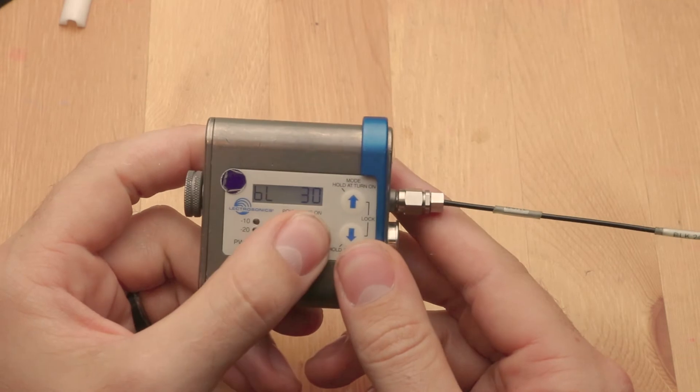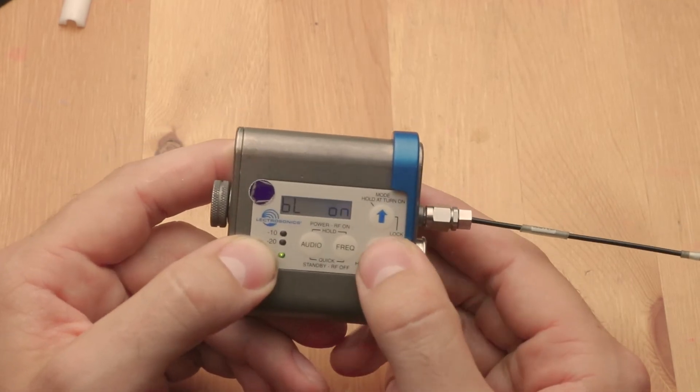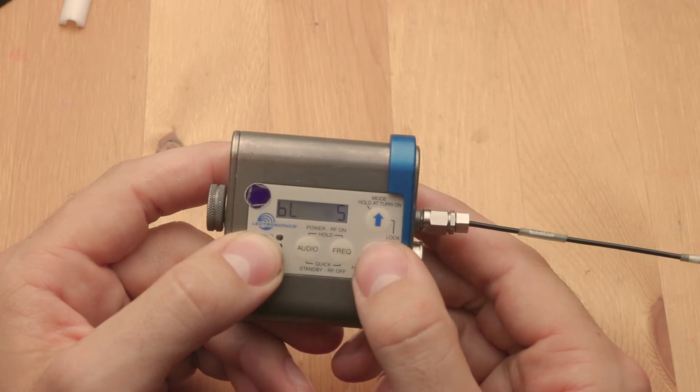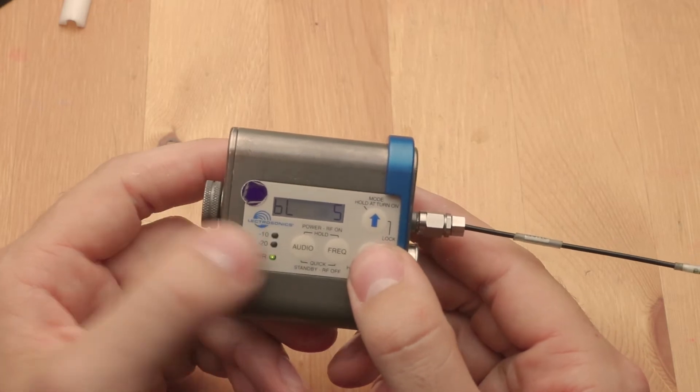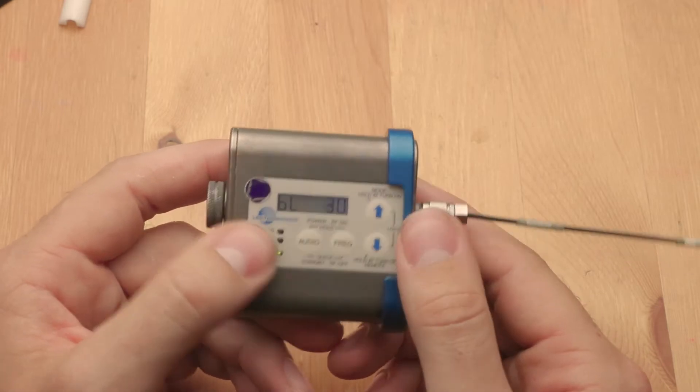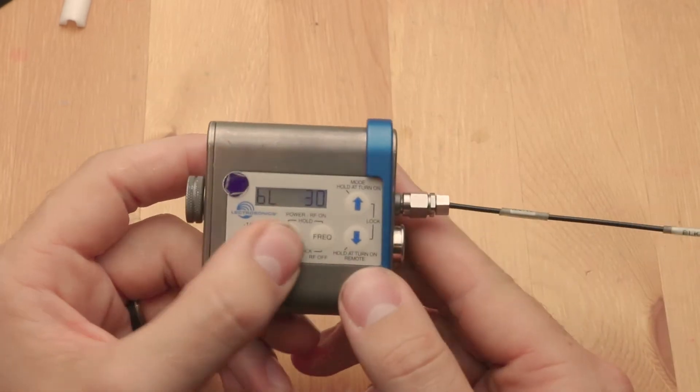And then this is backlight and how long the backlight lasts for. You can keep it on permanently, or you can have it for five seconds and then the backlight goes off, or 30 seconds. So I'm just keeping with the default of 30.